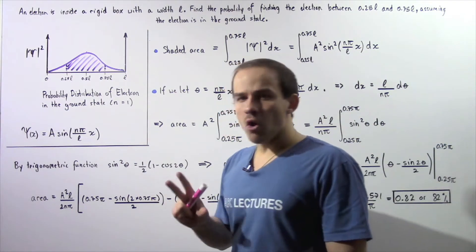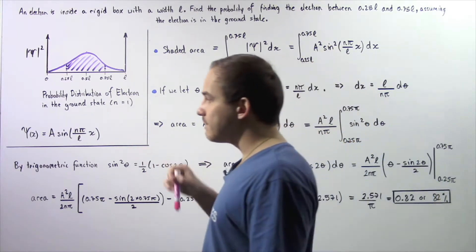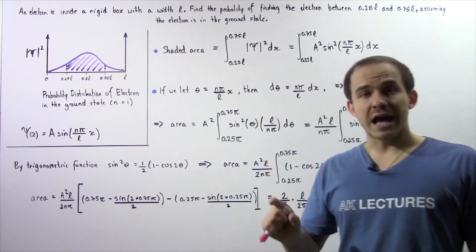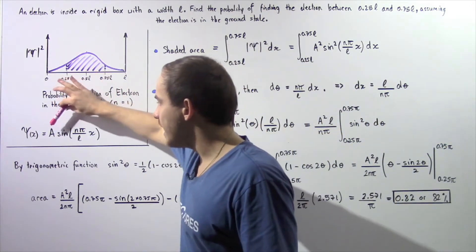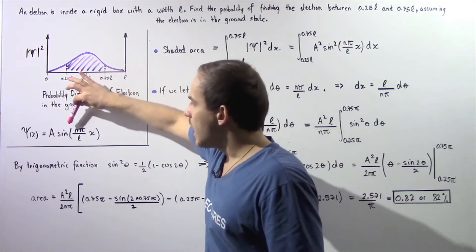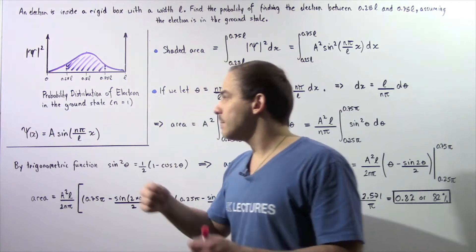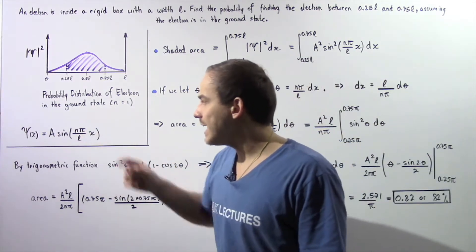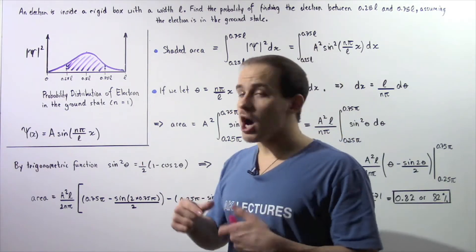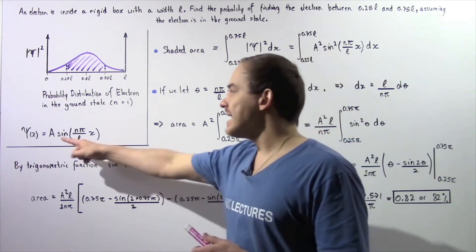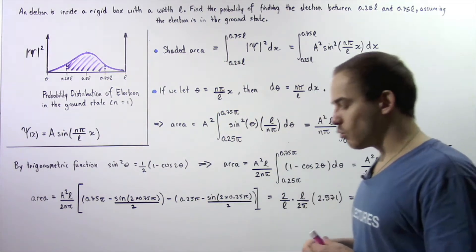Let's begin by recalling some information. The wave function given by ψ(x) that describes our electron within a rigid box is given by A multiplied by sine of nπ/L multiplied by x, where x is the position of the particle along the x-axis, n is the quantum number (in this case equal to 1), L is the width of that rigid box, and A is our constant, called the amplitude of our wave.